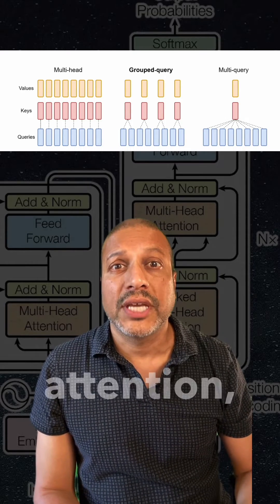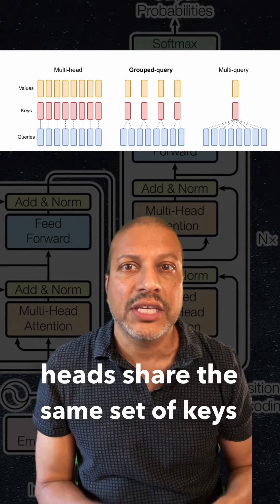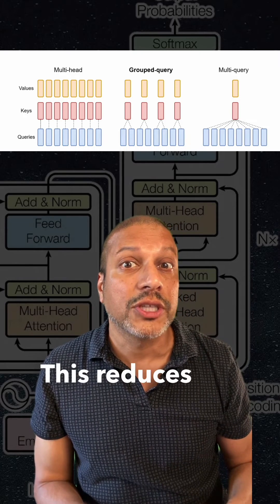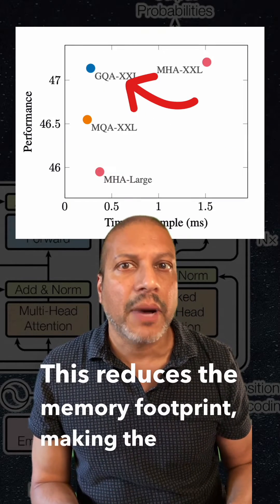The third is multi-query attention, where different attention heads share the same set of keys and values. Now this reduces the memory footprint, making the models much more efficient.